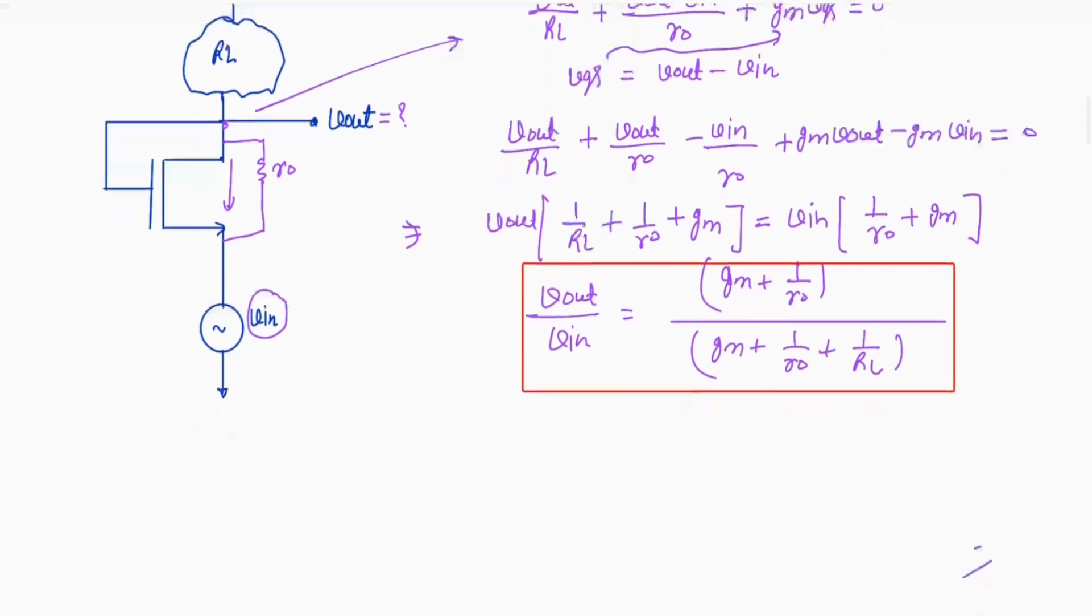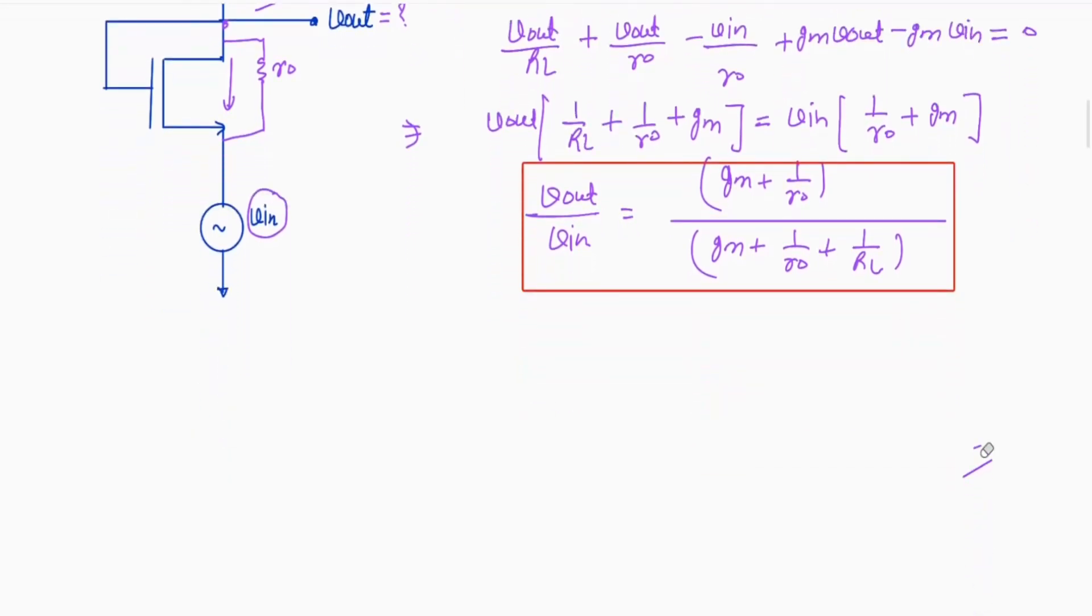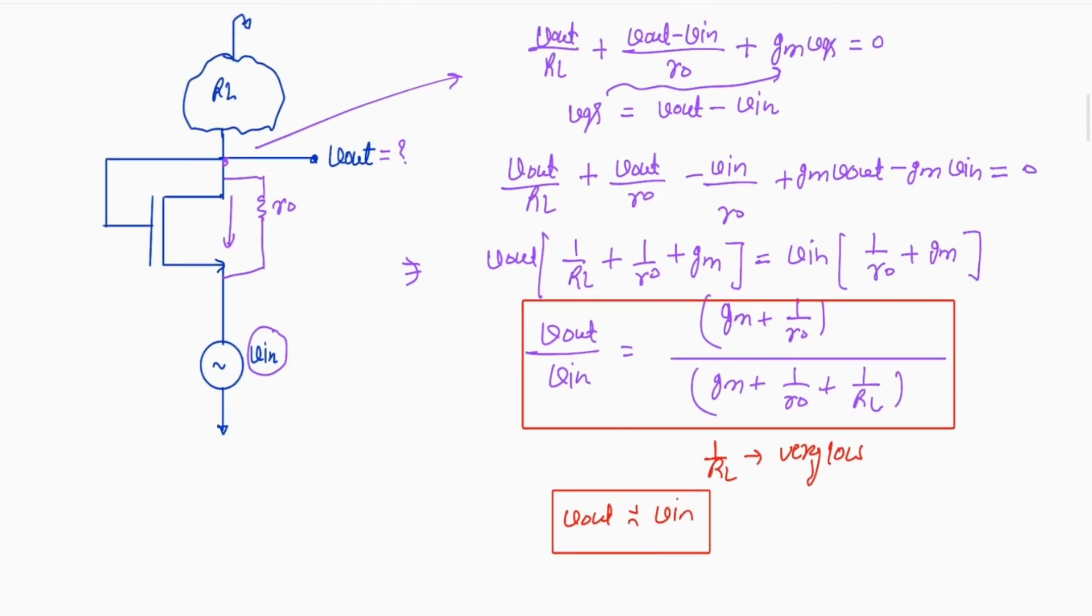So here we can see that if we assume RL is very high or even 1 kilo ohm or 2 kilo ohm, 1 by RL will be very less, very low. So Vout is approximately equal to Vin. If we are applying any input at the source, the output voltage is same as the input.